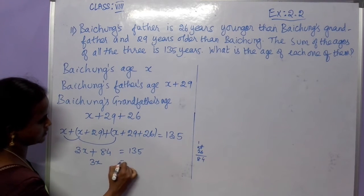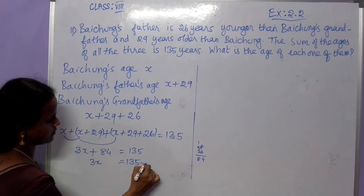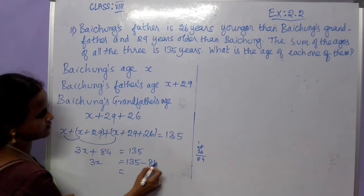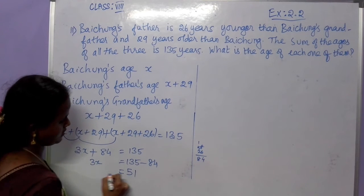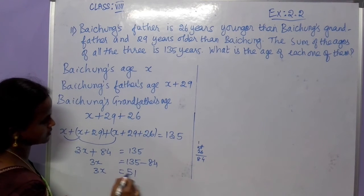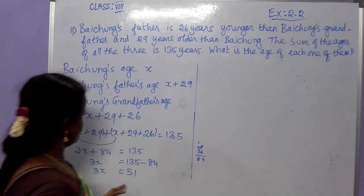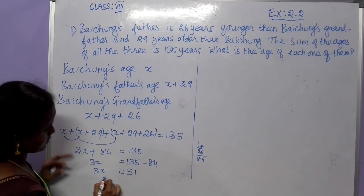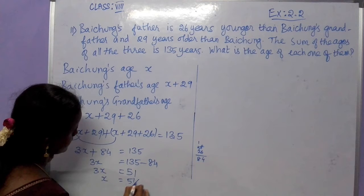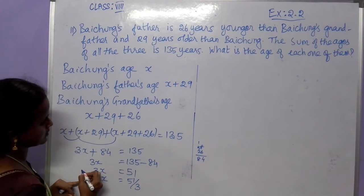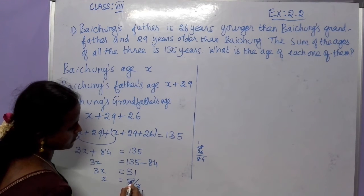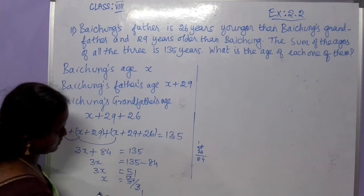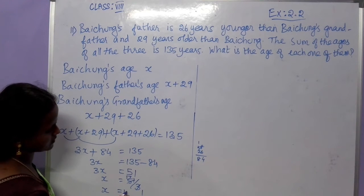So 3x is equal to 135 minus 84. Subtract: 135 minus 84 is 51. So 3x is equal to 51. Next step: x is equal to 51 divided by 3. Cancel — 1 three is 1, 7 threes are 21. The value of x is 17.